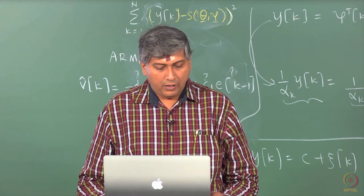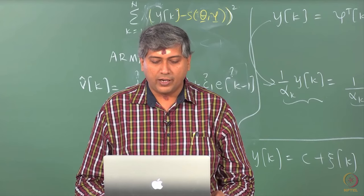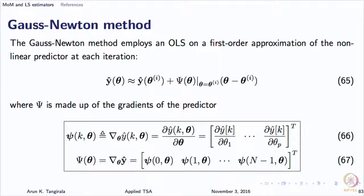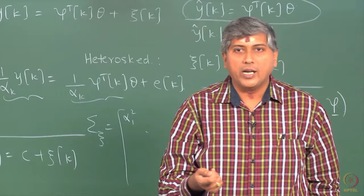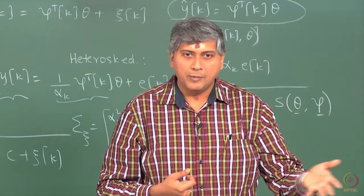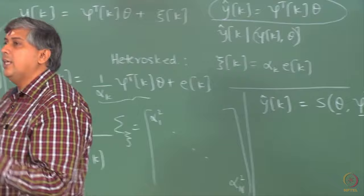Whatever you do, the general formula for updating theta is the standard one. You can go through a quick review of the Newton-Raphson and Gauss-Newton methods — these are standard methods you should have learnt in some numerical methods course. The Newton-Raphson method works with what is known as a Hessian: the direction is the Hessian, which is essentially the second derivative of the objective function with respect to theta. The Gauss-Newton method solves a locally linear least squares problem, which is why it is very attractive.